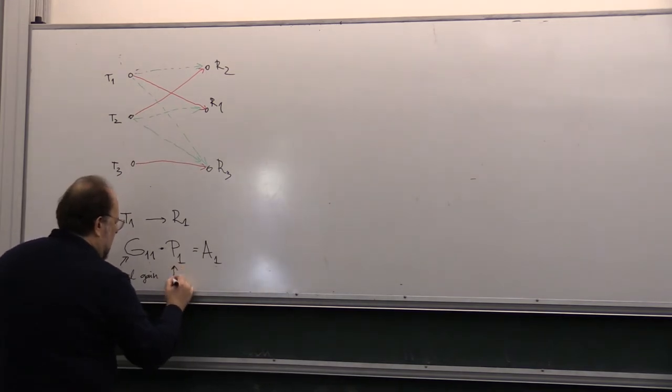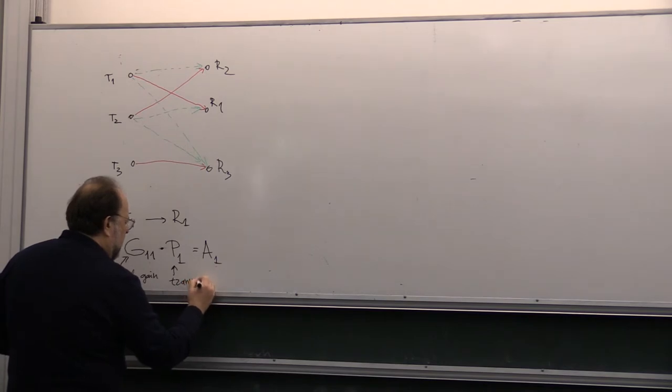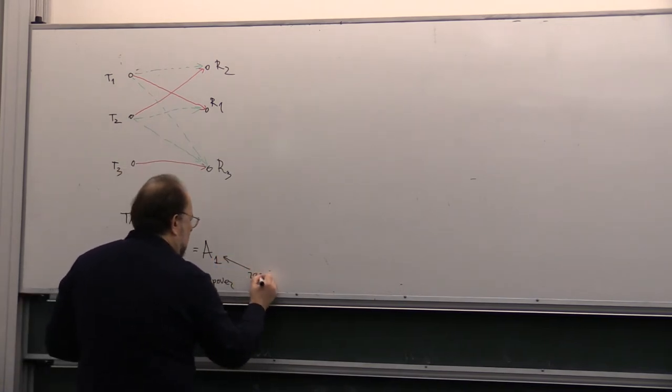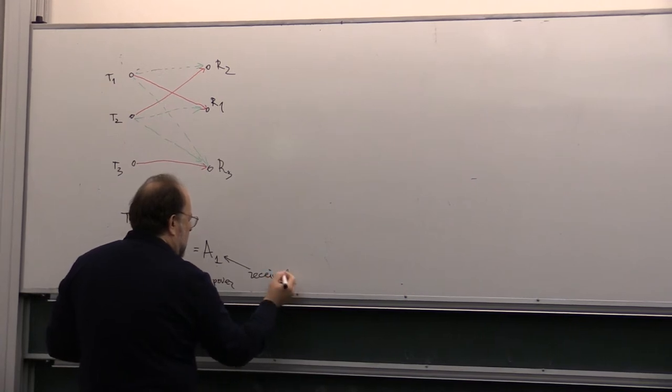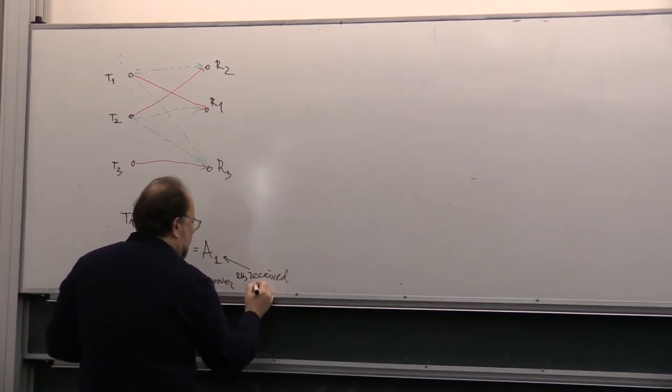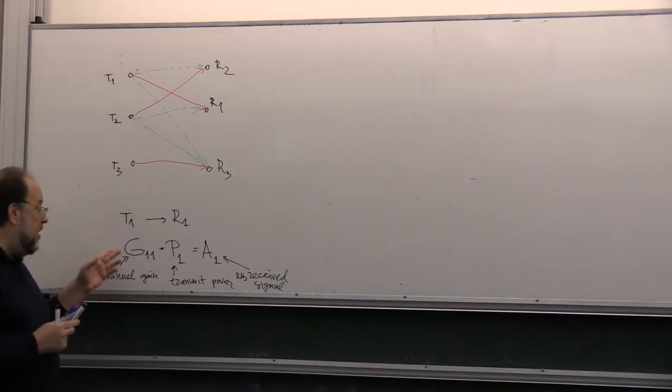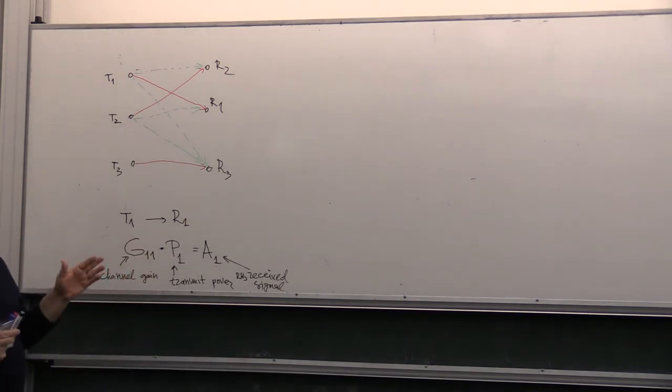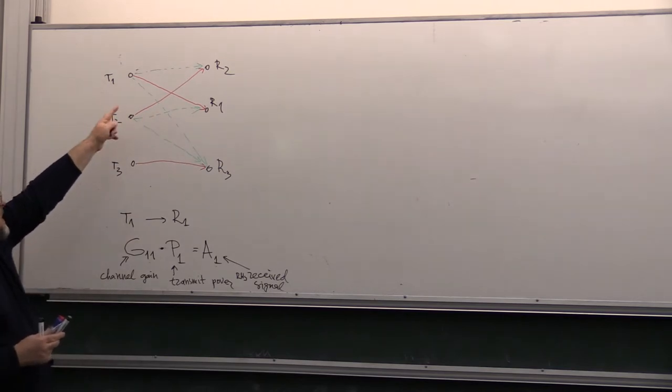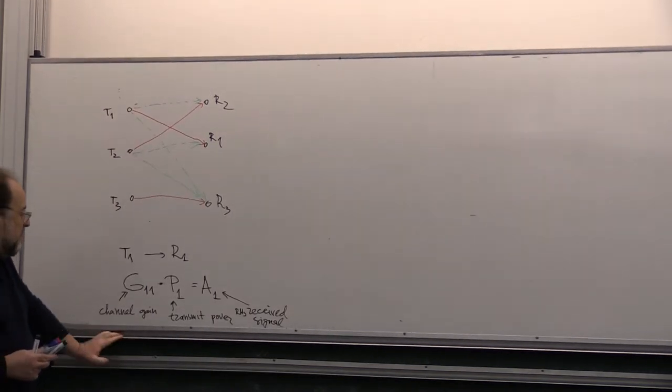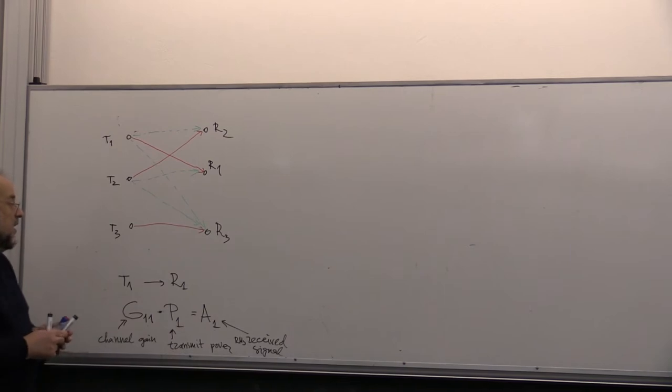So, this is called the channel gain. This is transmit power. And this is received RMS signal. Now, of course, it would be more logical to call g channel attenuation, right? Because the channel attenuates the signal that comes from the transmitter towards the receiver. But, for some reason, it's called the channel gain.